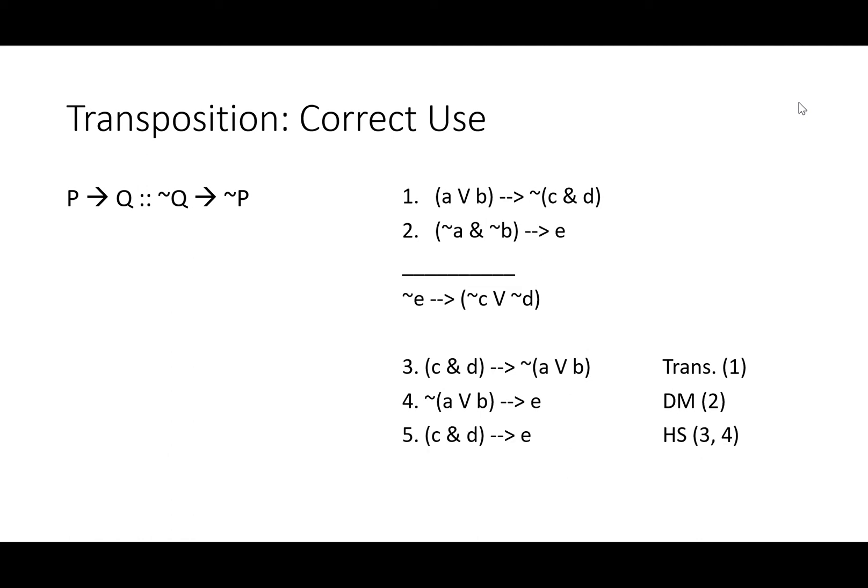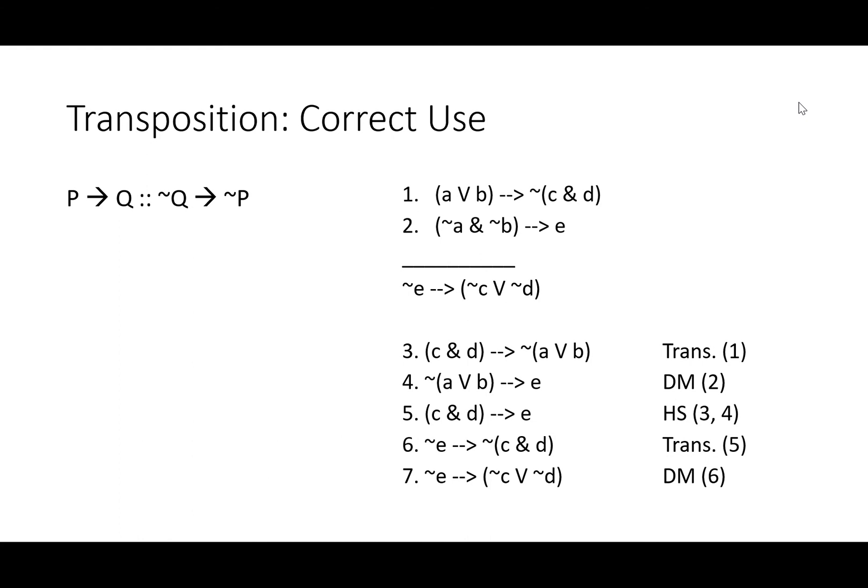Now we've got an antecedent and a consequent that match, so we can do a hypothetical syllogism and skip straight from if C and D to not E. Now transposition will put E in the right spot, matching our conclusion, and it'll give us it's not the case that C and D. So C and D has moved from consequent to antecedent and back. Now that it's back to being an antecedent, it's negated once more. Now we can use DeMorgan's and match exactly with our conclusion after all. If not E, then either not C or not D.